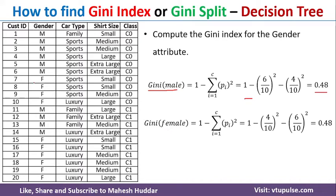Similarly, for female: we also have 10 female examples. The first 4 are C0 and the remaining 6 are C1. So, Gini(female) = 1 − (4/10)² − (6/10)² = 0.48.